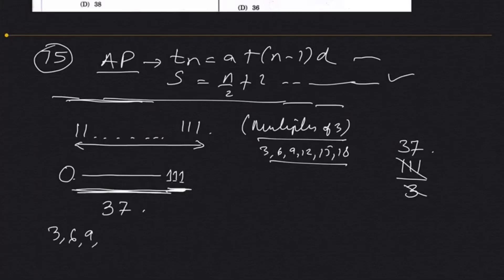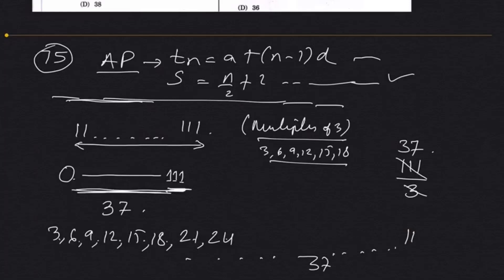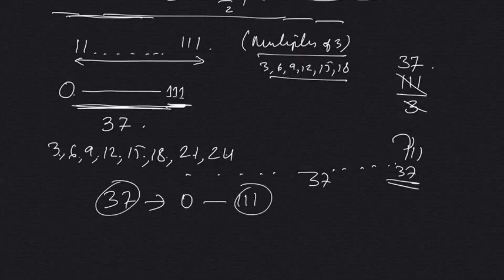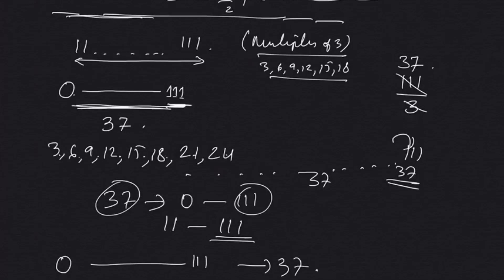Now, 3, 6, 9, 12, 15, 18, 21, 24 — counting 1, 2, 3, 4, 5, 6, 7, 8 — in this way there are 37 multiples from 0 to 111. From 0 to 10 there are 3 multiples: 3, 6, 9. So the trick is: from 0 to 111 is 37, minus from 0 to 10 which is 3 equals 34. That is the trick.